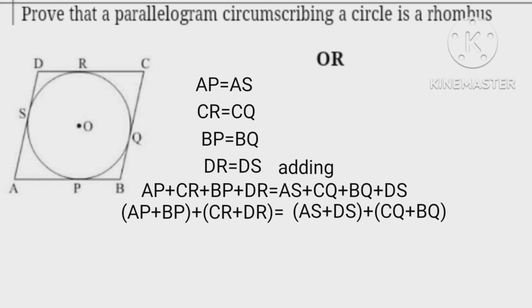Hence AB plus DC equals AD plus BC. But AB equals DC and AD equals BC since ABCD is a parallelogram.